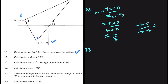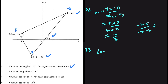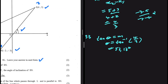Question 3.3: calculate the size of theta, the angle of inclination of SN. We know that tan(theta) equals the gradient of that line, so theta equals tan inverse of the gradient, which is 4/3. Putting that into the calculator gives 53.13 degrees.